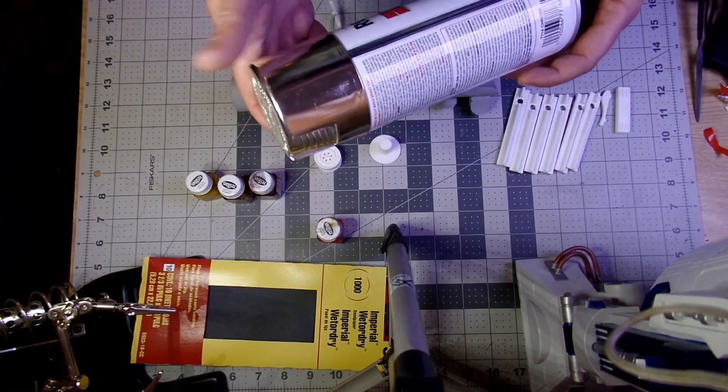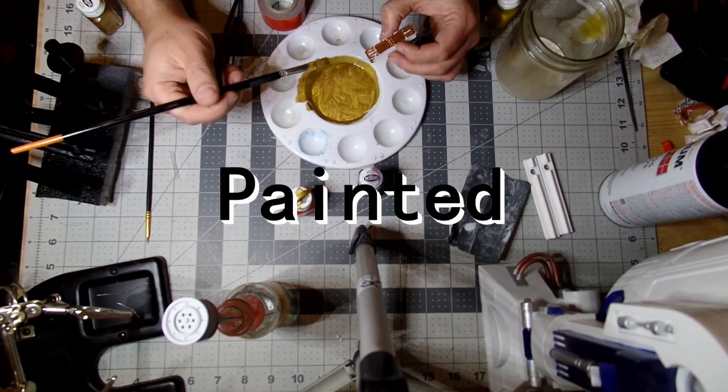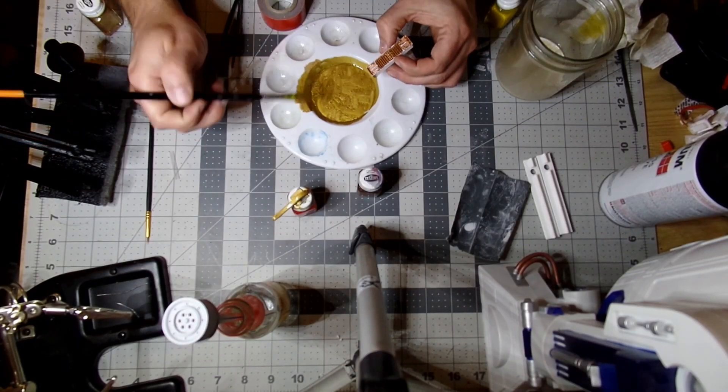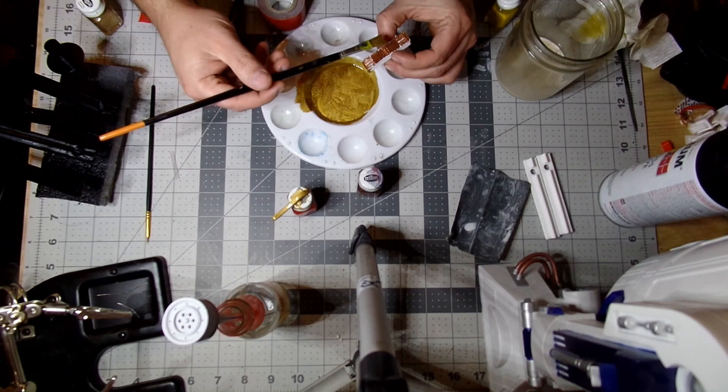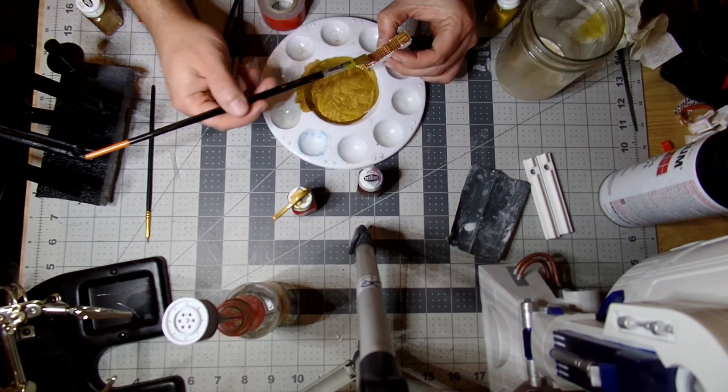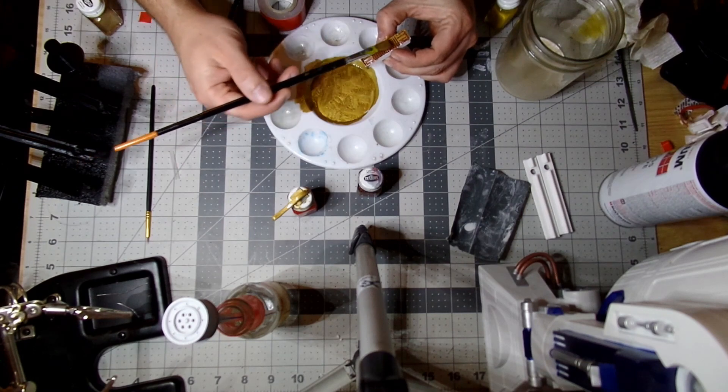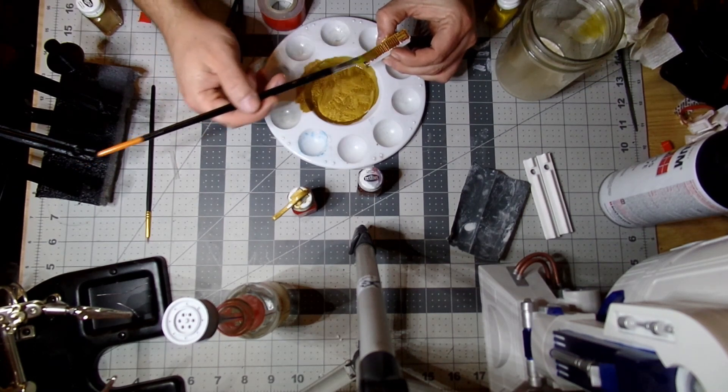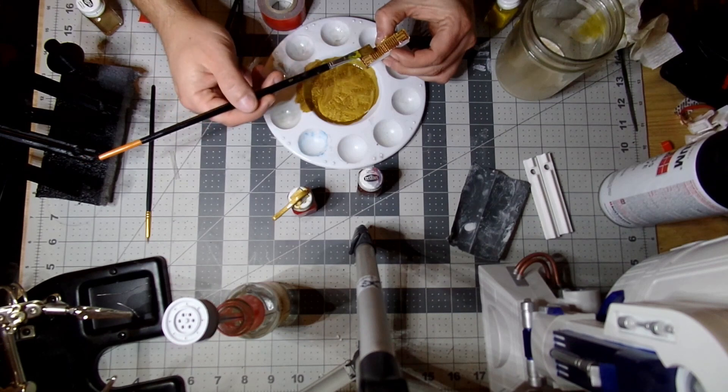I painted inside the grooves of this on-off button with some copper enamel to really get those small details some definition. It really makes it pop. And then over that I painted it with a gold color.